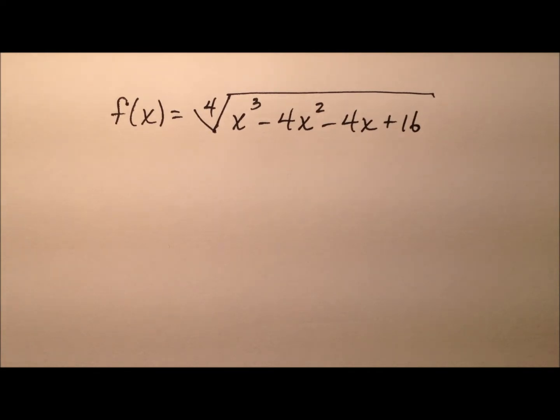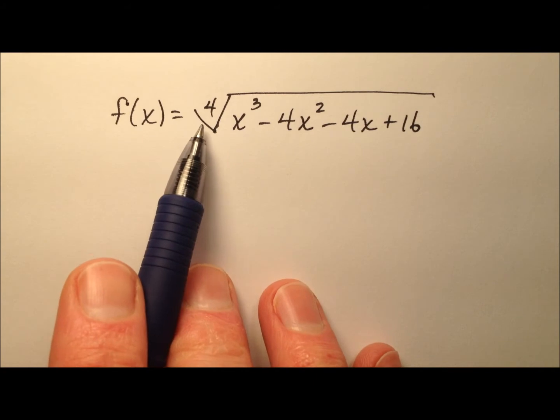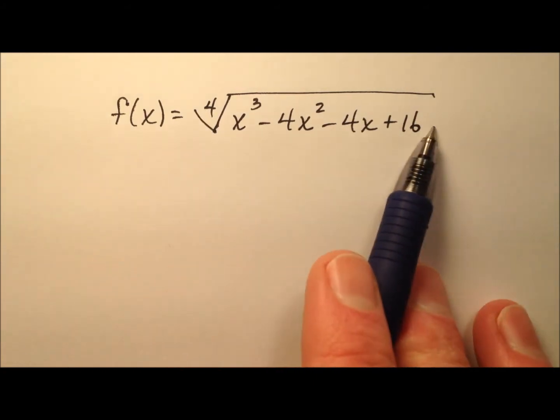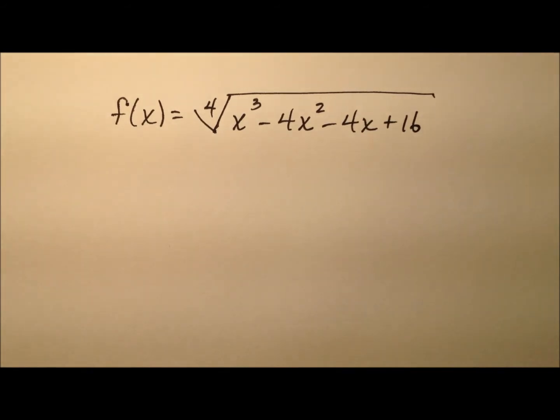In this example, we're going to determine the domain for this function f of x, and what we have here is the fourth root of this polynomial expression x cubed minus 4x squared minus 4x plus 16. If you'd like to go ahead and try this first, pause the video and do so, and then come on back and we'll work this domain together.